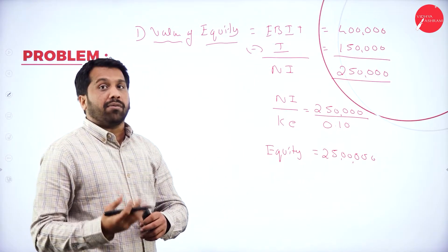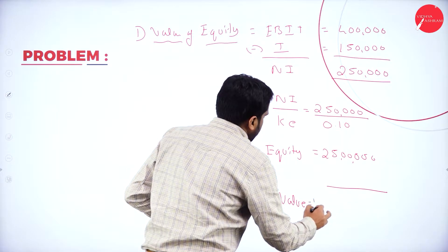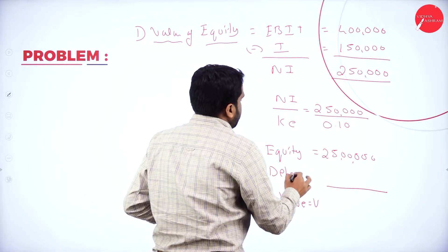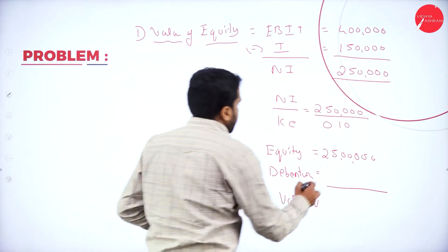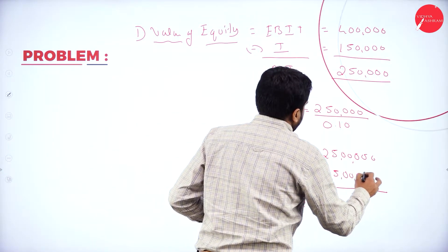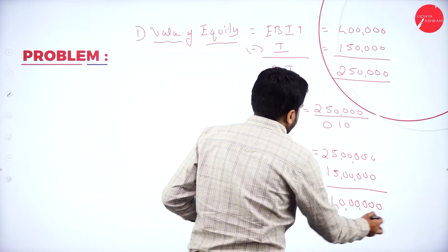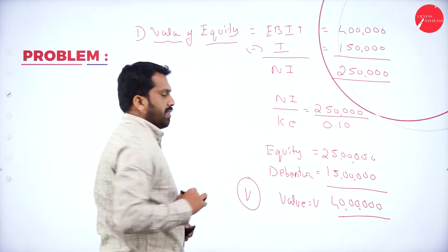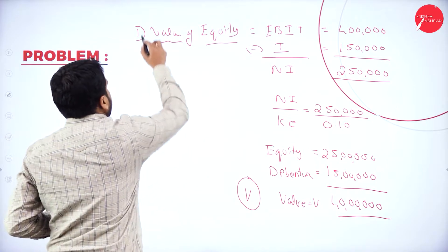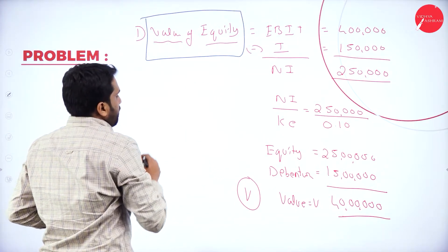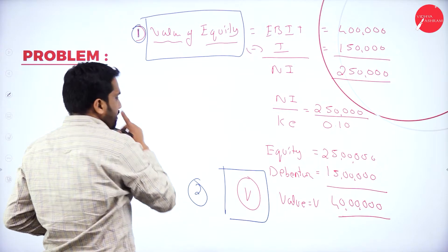After getting equity, we have to find out the value of the firm. How to find out value? If you add the debenture to equity, you will get the value of the firm. Debentures are 15 lakh. So 25 plus 15 gives us 40 lakh. So I got the value of the firm as well — 40 lakh.